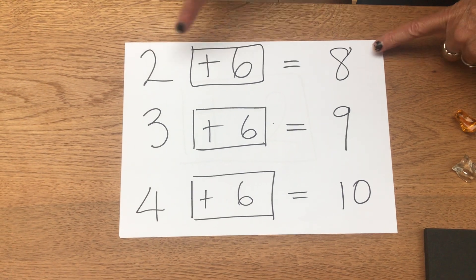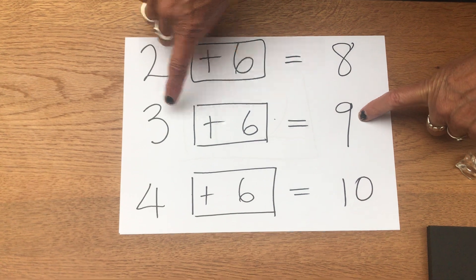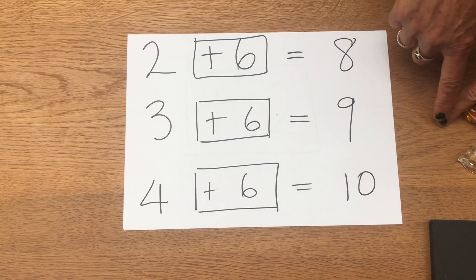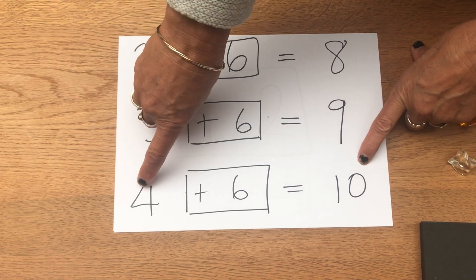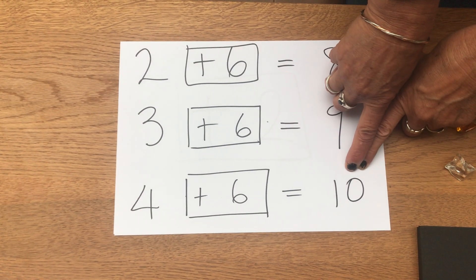So this special add six machine, if I put in two gives an answer of eight. If I put in three gives an answer of nine as we've just seen. So we might predict that if I put in four, I'll get an answer of ten.